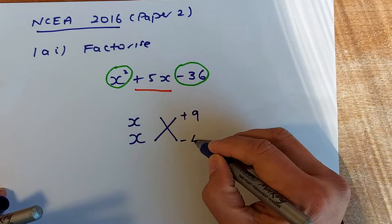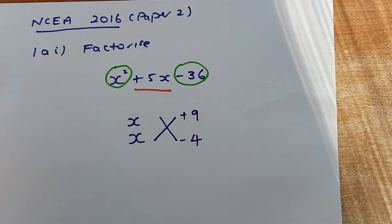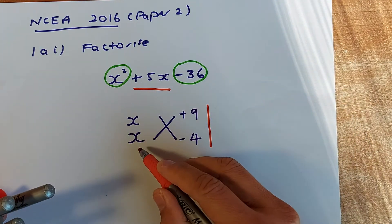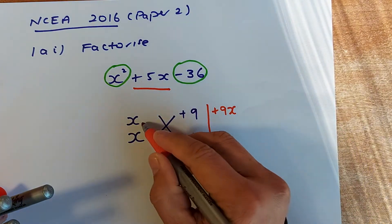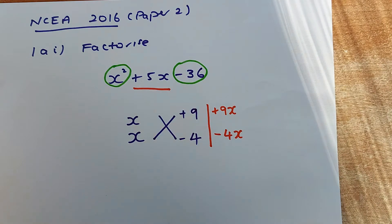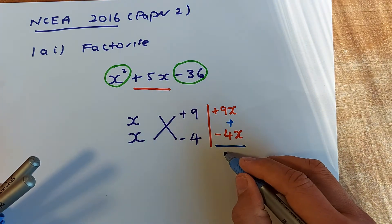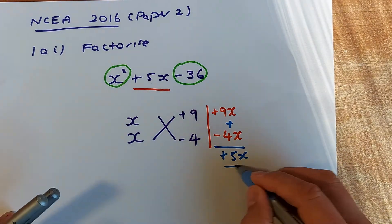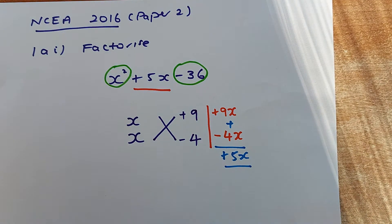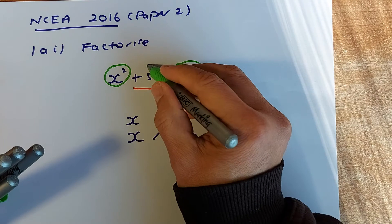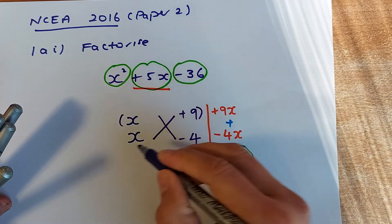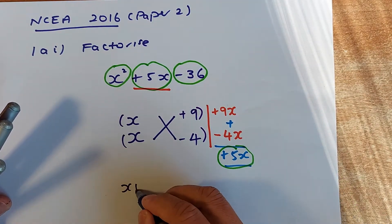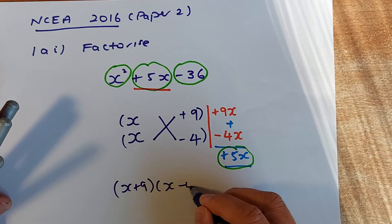We shall try 9 and 4. Cross multiply: x times 9 is +9x, and x times negative 4 is -4x. Add the two results together: 9x minus 4x is positive 5x. Check whether that matches the middle expression — it does, so we have the answer. Put a bracket on it and write out the answer: (x + 9)(x - 4).